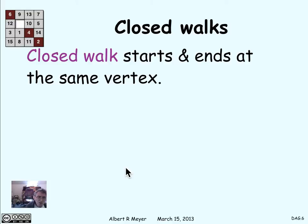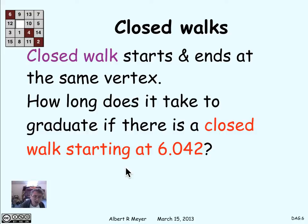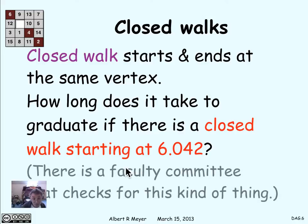Now, what happens if you have a closed walk? A closed walk is a walk that starts and ends at the same vertex. Suppose there was a closed walk that started at 6042 and ended at 6042 — how long does it take to graduate then? Well, it takes a long time, because you can't take 6042 until you've taken 6042, and you're never going to be able to take it. That's a bad thing. We definitely don't want the prerequisite structure of courses to have a closed walk of positive length.